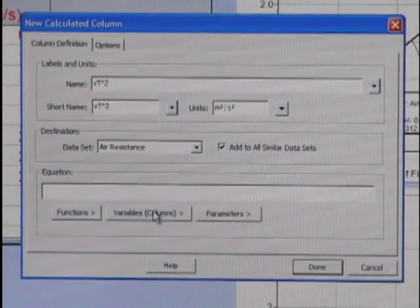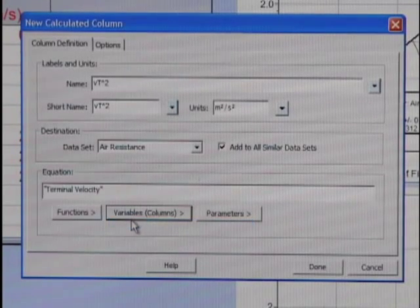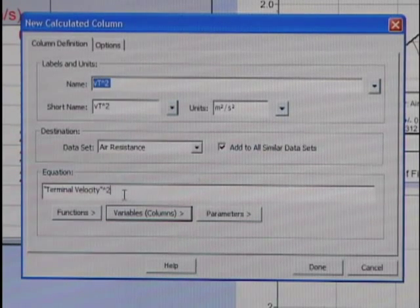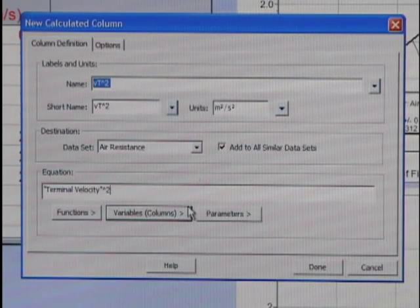Which is right there, and my calculation rule is just to take the square of that. So I've got the terminal velocity, caret 2, which is to the second, means the terminal velocity to the second power or the square.